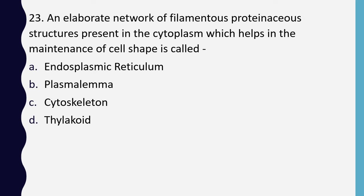Question 23. An elaborate network of filamentous proteinaceous structures present in the cytoplasm which helps in maintenance of cell shape is: endoplasmic reticulum, plasma lemma, cytoskeleton, or thylakoids. Correct answer is option C: cytoskeleton.